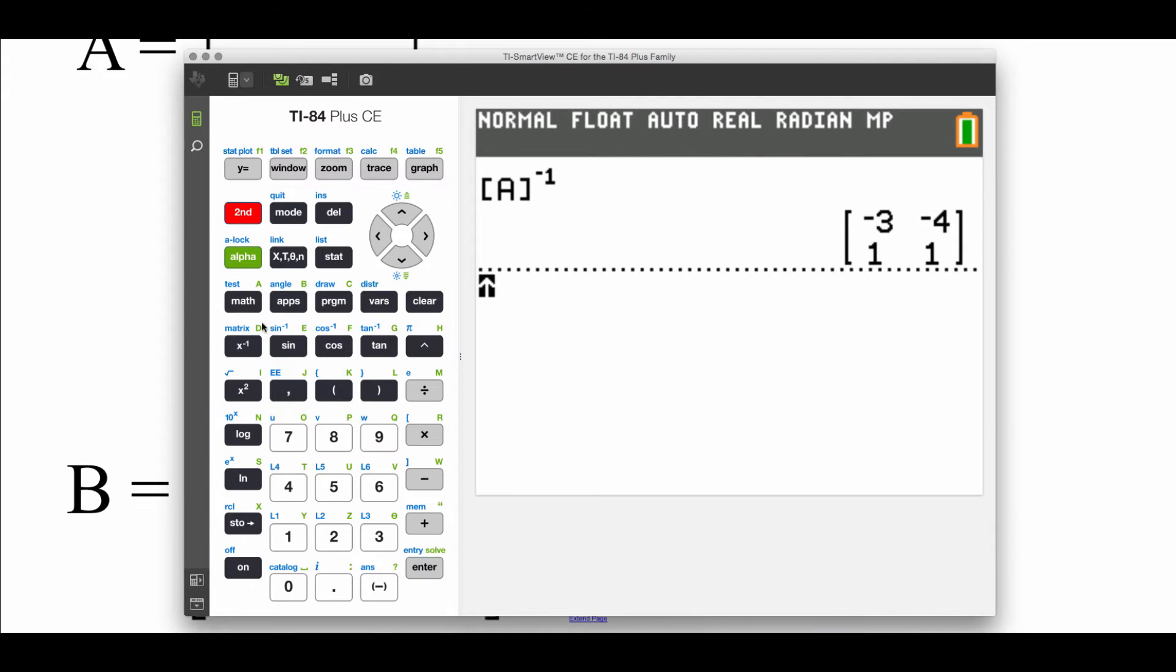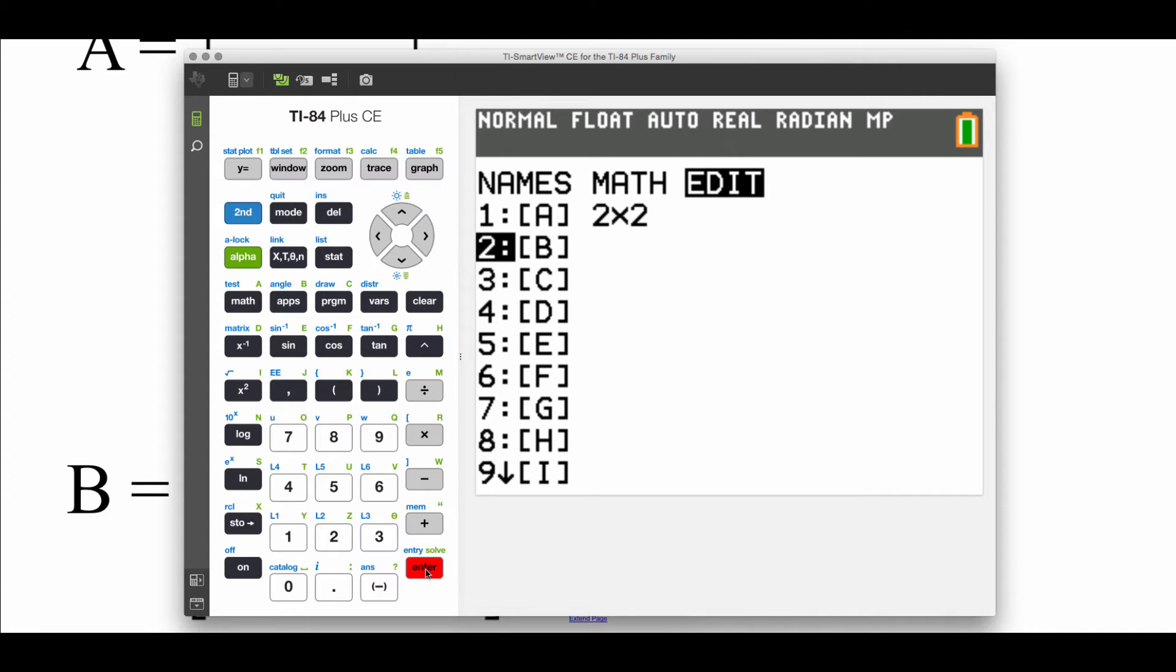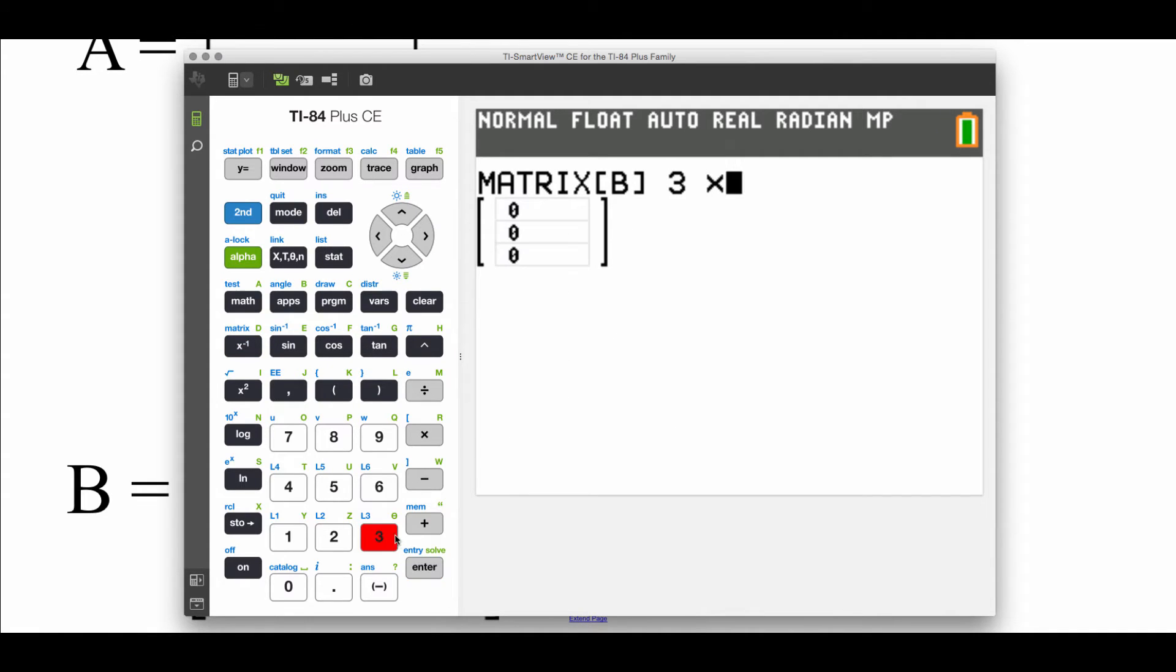If we look at matrix B, it's a three by three matrix, but we can still approach it the same way. So let's go second matrix. I'm going to edit and we'll do this one as matrix B. This one is a three by three matrix, and we've got one, negative one, zero, one, zero, negative one, six, negative two, and negative three. So we enter those values in, go second quit.